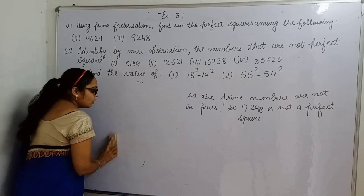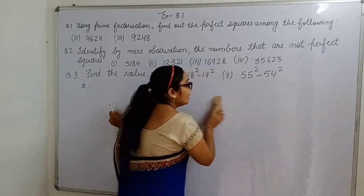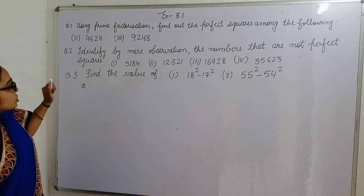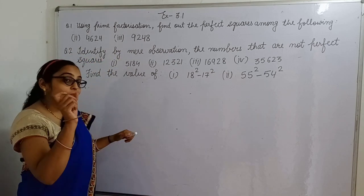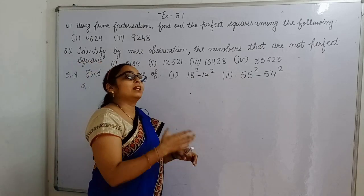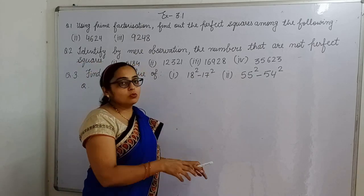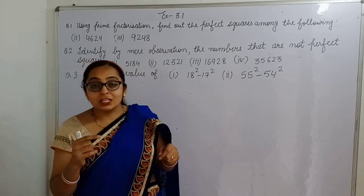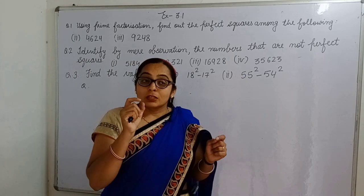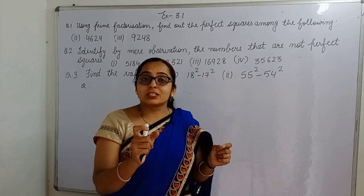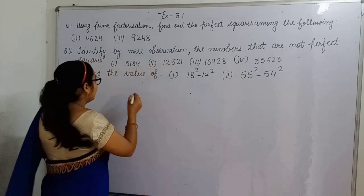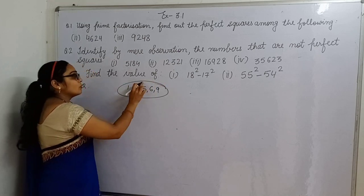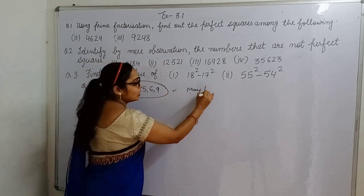Question number 2. In question number 2, what we have to do? By mere observation the numbers that are not squares, those numbers we have to identify. By mere observation means just we have to look and then tell. Here we will use properties of squares. Now dear students, I told you about the property - the number whose unit digit is 1, 4, 5, 6, 9, agar kisi ka unit digit ye hai, that may or may not be a perfect square.